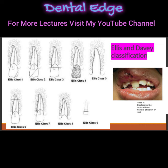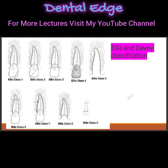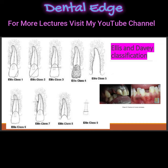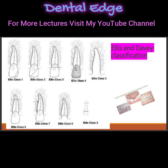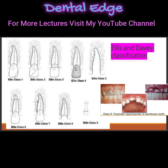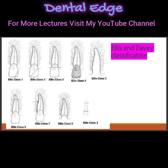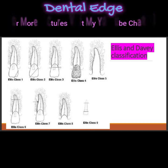Class seven is displacement of the tooth without fracture of the crown or root. Class eight is fracture of the crown en masse, so the crown structure is lost. Class nine is fracture of primary teeth. For more lectures, do watch my YouTube channel.